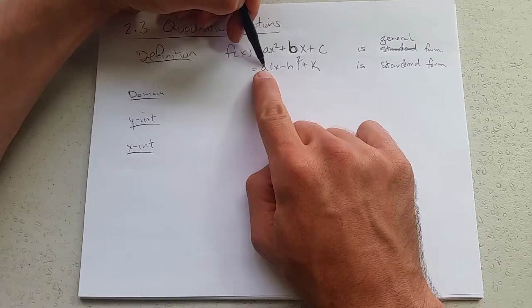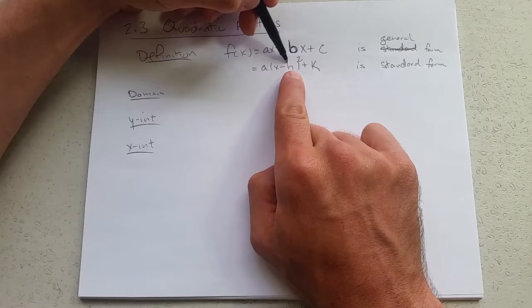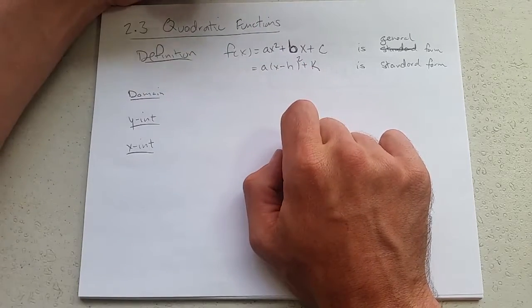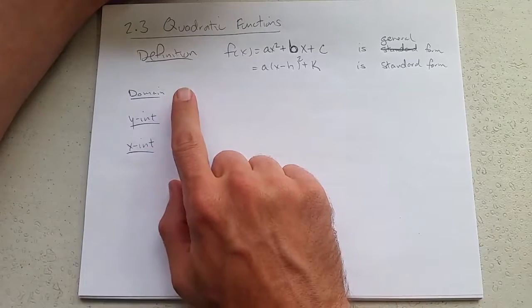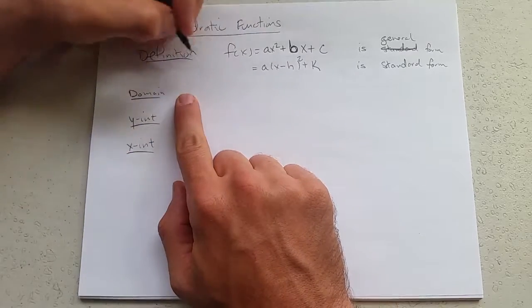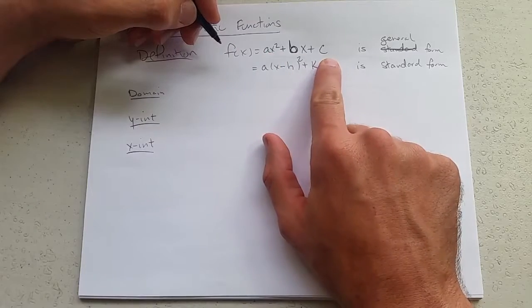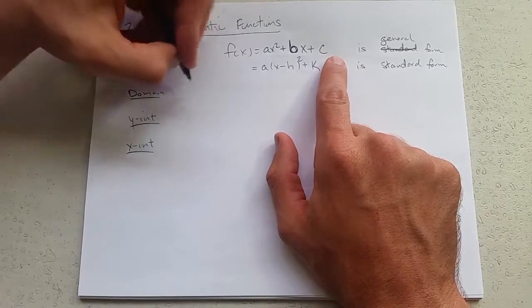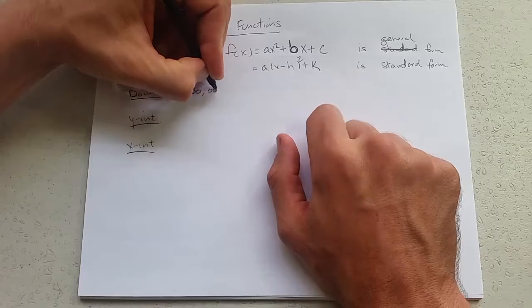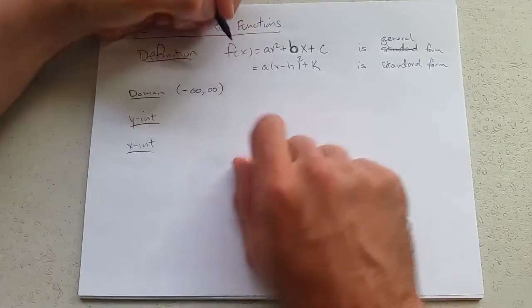Domain of a quadratic function: you're not dividing by anything and there's no square roots, so domain is all numbers and we'll write that as negative infinity comma infinity.